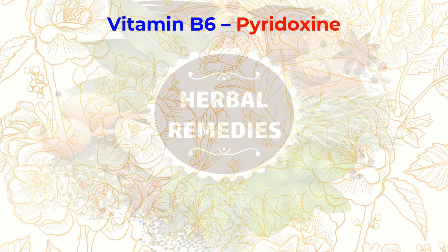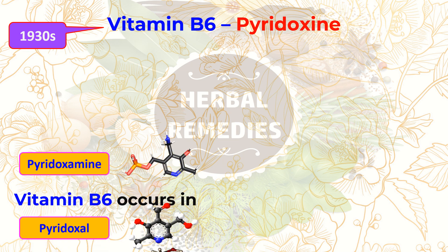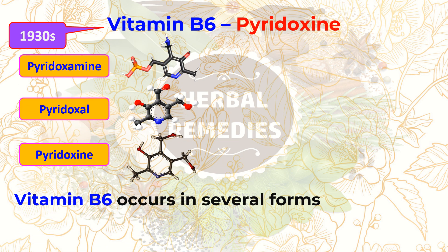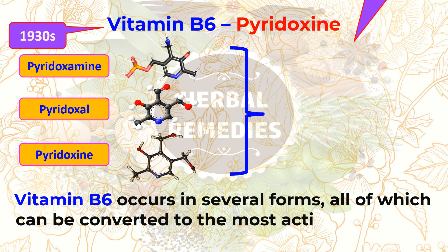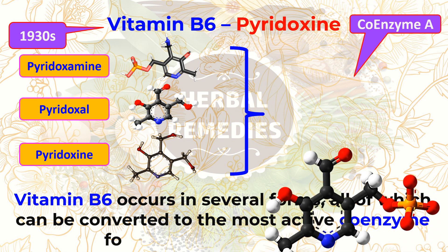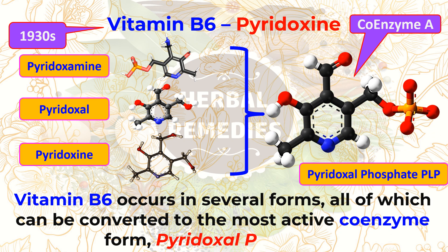Vitamin B6 was discovered in the 1930s. Vitamin B6 occurs in several forms, all of which can be converted to the most active coenzyme form, pyridoxal phosphate (PLP). PLP has a vital role in catalyzing dozens of chemical reactions in the body.